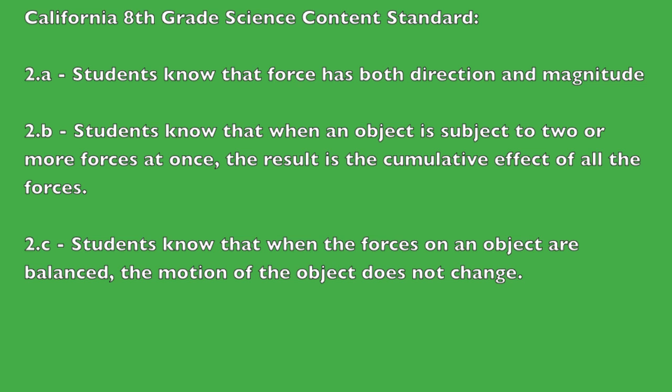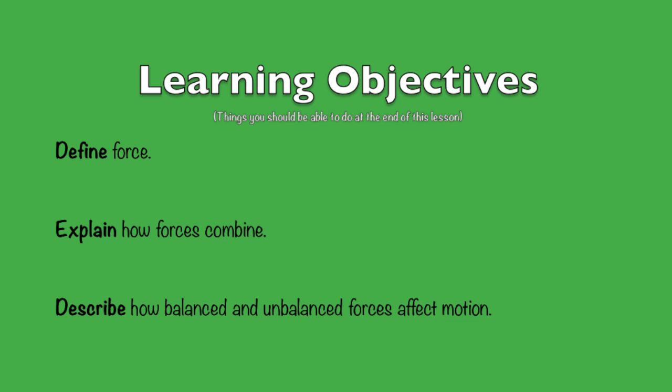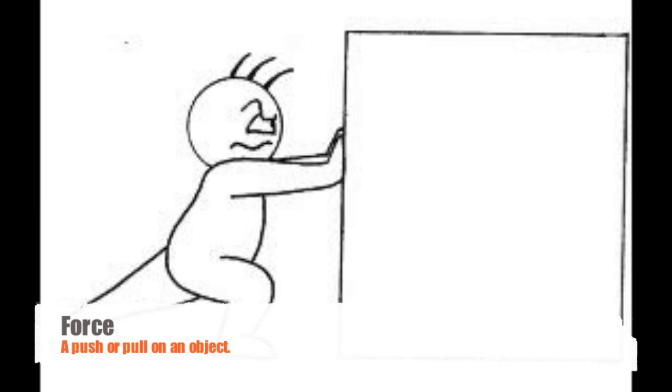This lesson covers California 8th grade science content standards 2a, which states that students know that force has both direction and magnitude; 2b, which states that students know when an object is subject to two or more forces at once the result is the cumulative effect of all the forces; and 2c, which states that students know that when forces on an object are balanced the motion of the object does not change. The learning objectives are: define force, explain how forces combine, and describe how balanced and unbalanced forces affect motion.